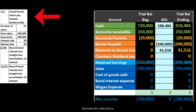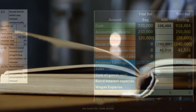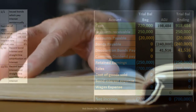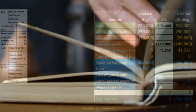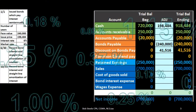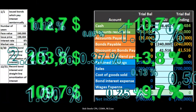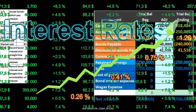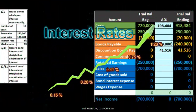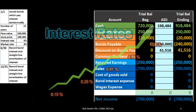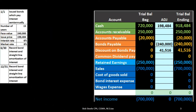The bond is a promise to pay at some point in the future. One of the main characteristics of a bond is that the interest rate is typically already stated on the bond, as is the carrying amount — meaning the amount that will be due at the end of the term of the bond.